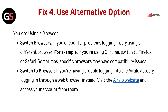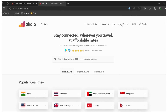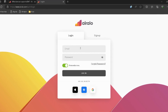Fix 4: Use an alternative option. If you are using a browser and encounter problems logging in, try using a different browser — for example, if you are using Chrome, switch to Firefox or Safari, as specific browsers may have compatibility issues. Alternatively, if you are having trouble logging into the AirLo app, try logging in through a web browser instead. Visit the AirLo website — the link is provided in the description — and access your account from there.